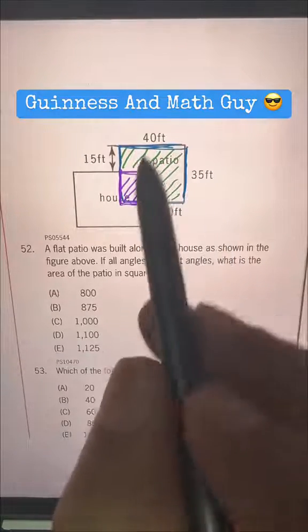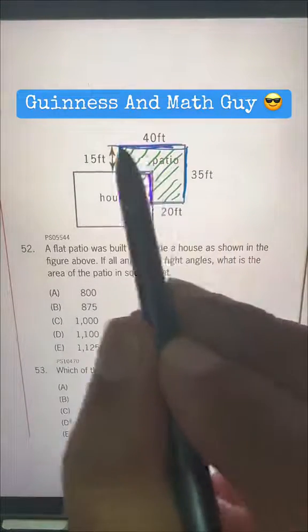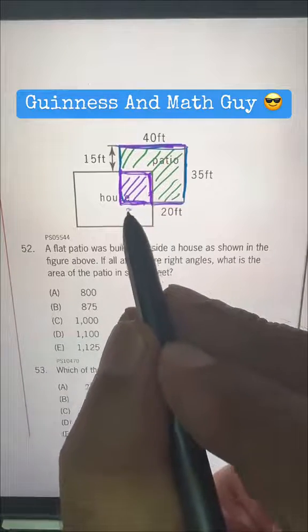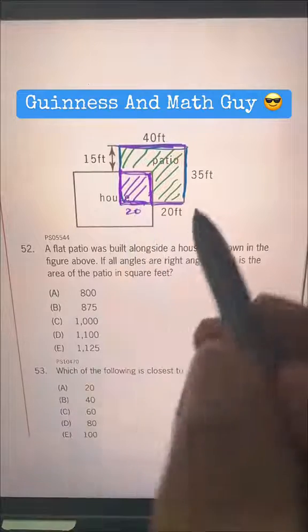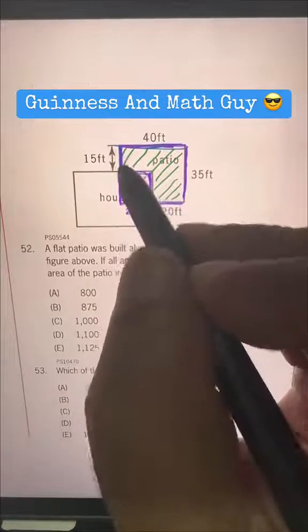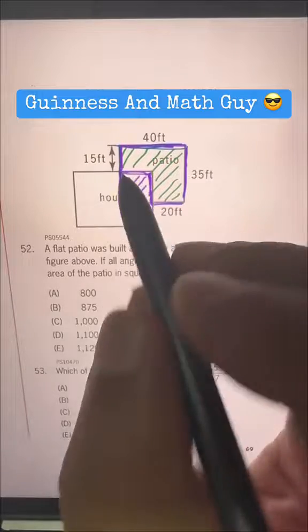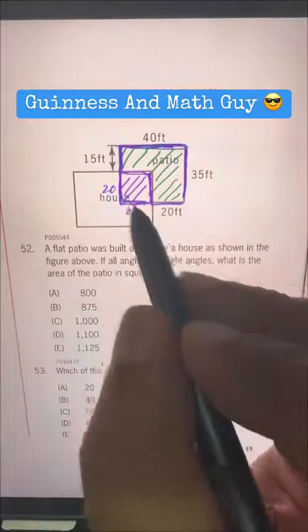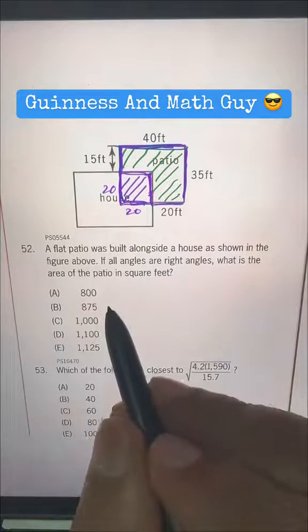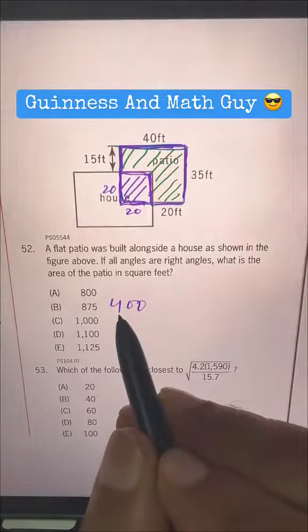Let's see, we have this as 40 and this 20. So 40 minus 20 is 20. This is 20. Now here we have 35 and this is 15. 35 minus 15 is 20 again. So this area is 20 times 20, that is 400. We have 400 here.